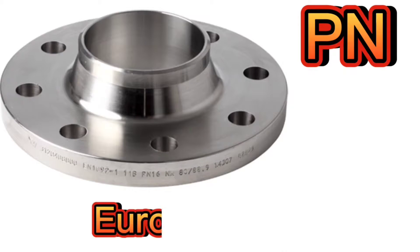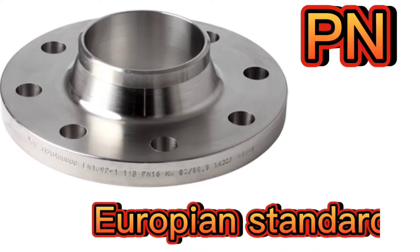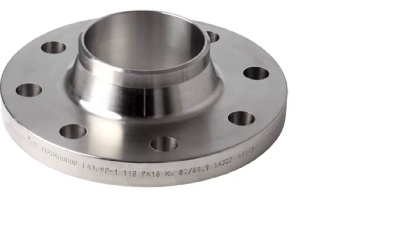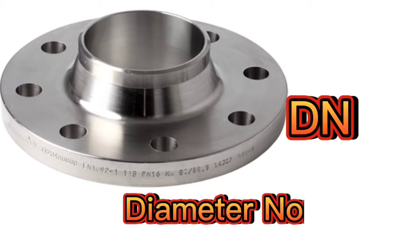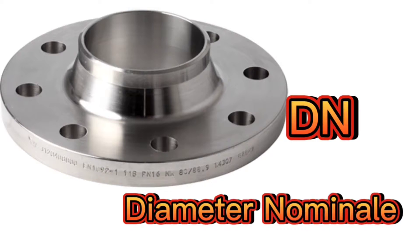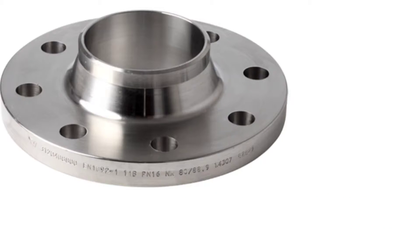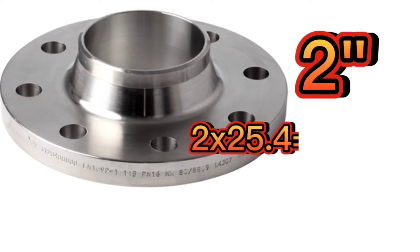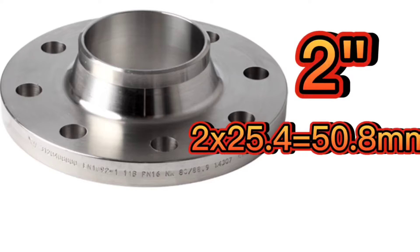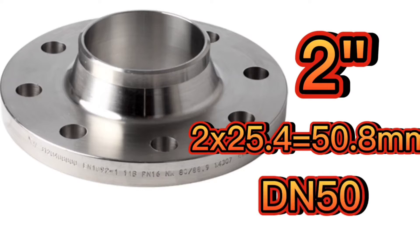PN is a classification system for flanges mostly used in European standards for installations in European countries. Another designation, DN — diameter nominally — is used with the term PN to specify the size of a flange. DN is a rough translation of imperial sizes into metric; for example, a 2-inch flange (2 × 25.4 = 50.8 mm) is stated as DN 50.